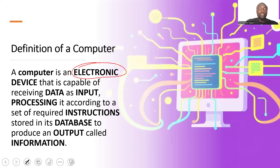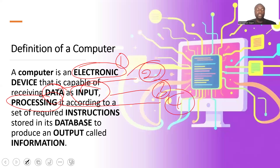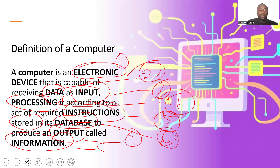A computer is an electronic device — that is the first characteristic. It is capable of receiving data — second characteristic — as input — third — and then processing it — fourth — according to a set of required instructions — fifth — stored in its database — sixth — to produce an output — seventh — called information — eighth. These are the eight definitional characteristics when defining a computer.